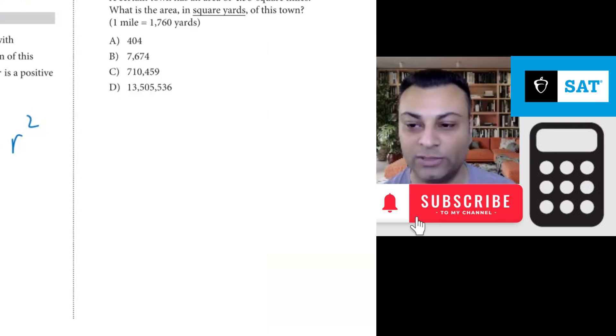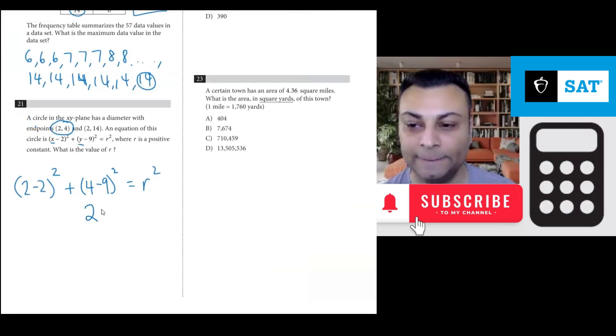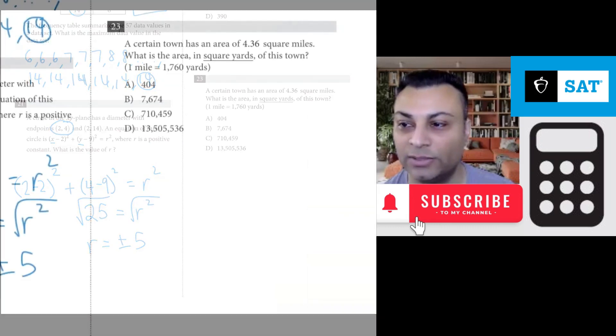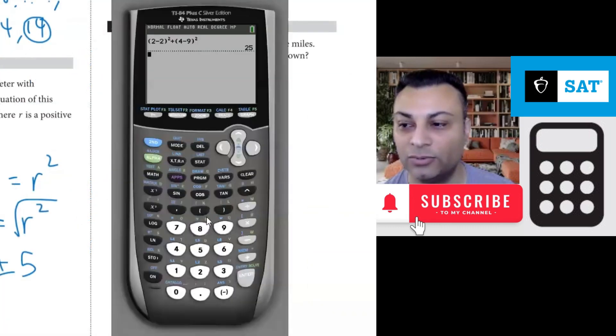So we have 25 = r². Then you take the square root of both sides and you get r = ±5. Let's verify that in the calculator real quick.